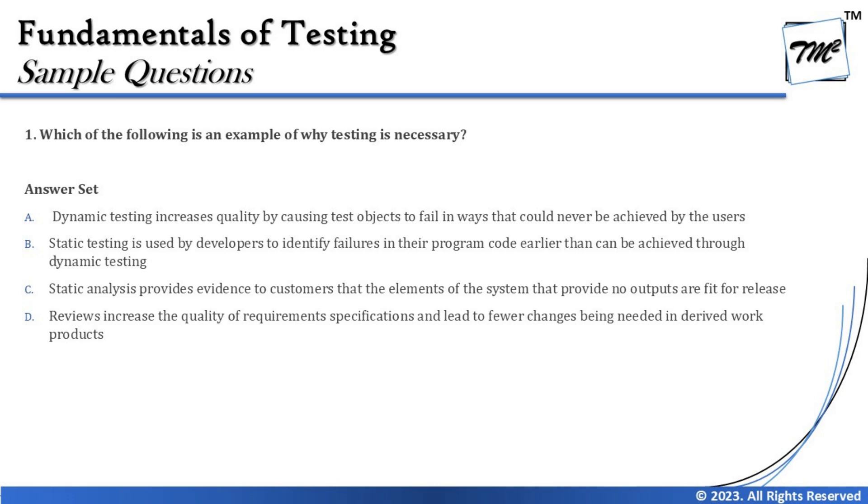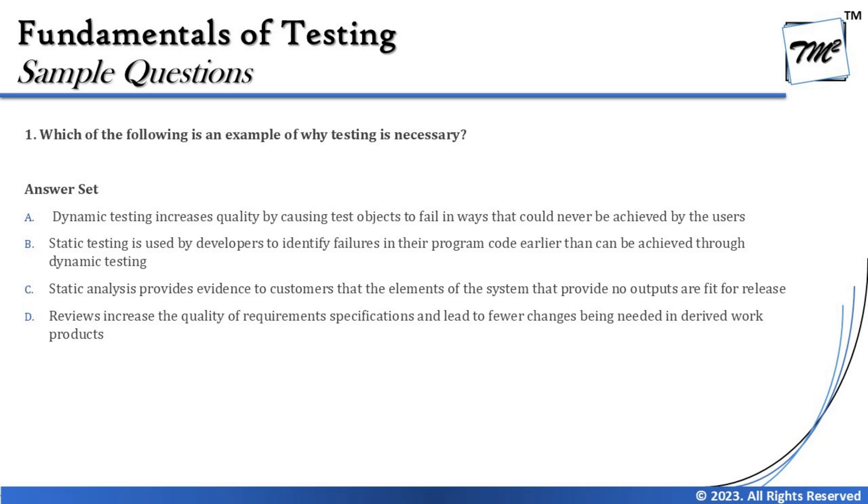The very first question from Chapter One of Set B asks: which of the following is an example of why testing is necessary? The second topic of Chapter One explains how testers contribute to the overall success of the product by being engaged and involved — finding defects and conducting dynamic testing to identify failures. Let's look at the options since the context needs more clarity.